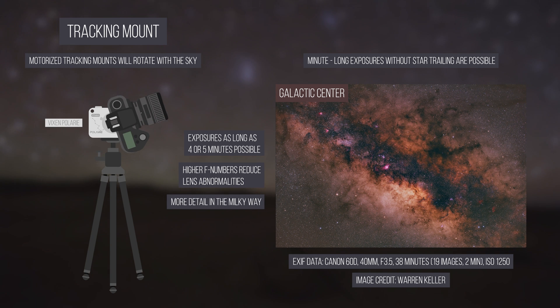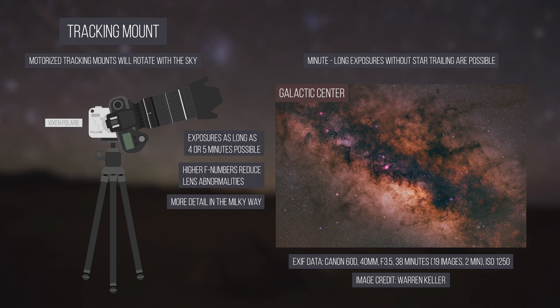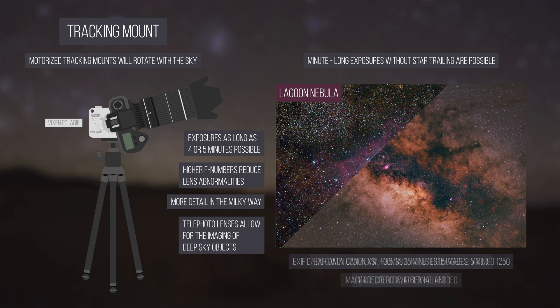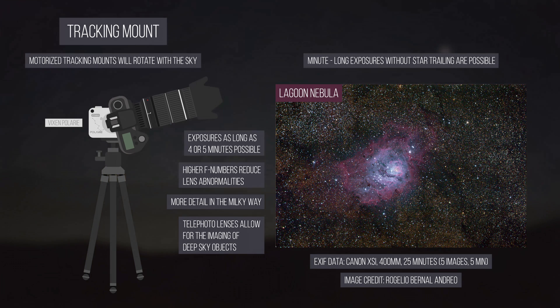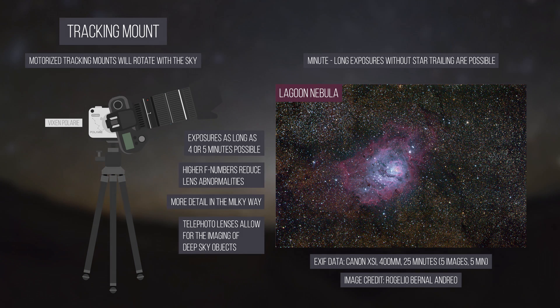Milky Way details will be greatly enhanced. Attaching a telephoto lens to the tracker can also allow you to image fainter nebulae and galaxies by stacking multiple exposures. Look for a tutorial on that later.